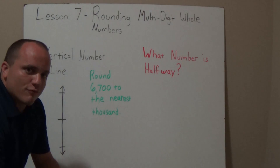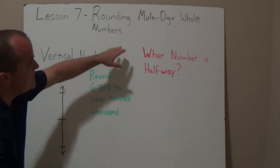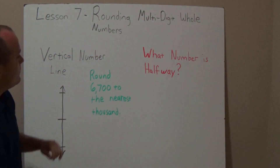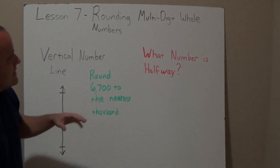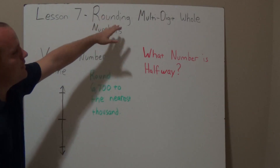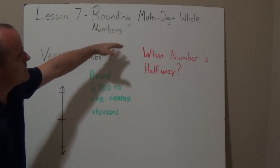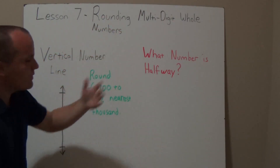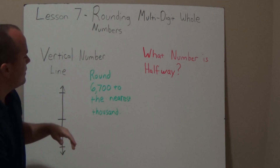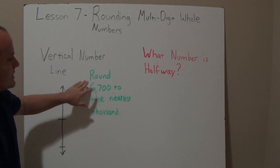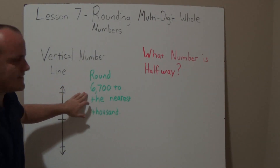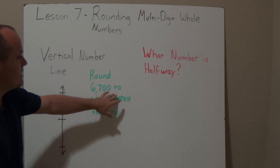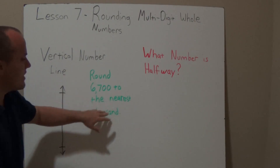Welcome to Lesson 7, Rounding Multi-Digit Whole Numbers. What we're going to do this lesson is learn how to round whole numbers — multi-digit means more than one digit. The question we're going to ask ourselves is: round 6,700 to the nearest thousand.